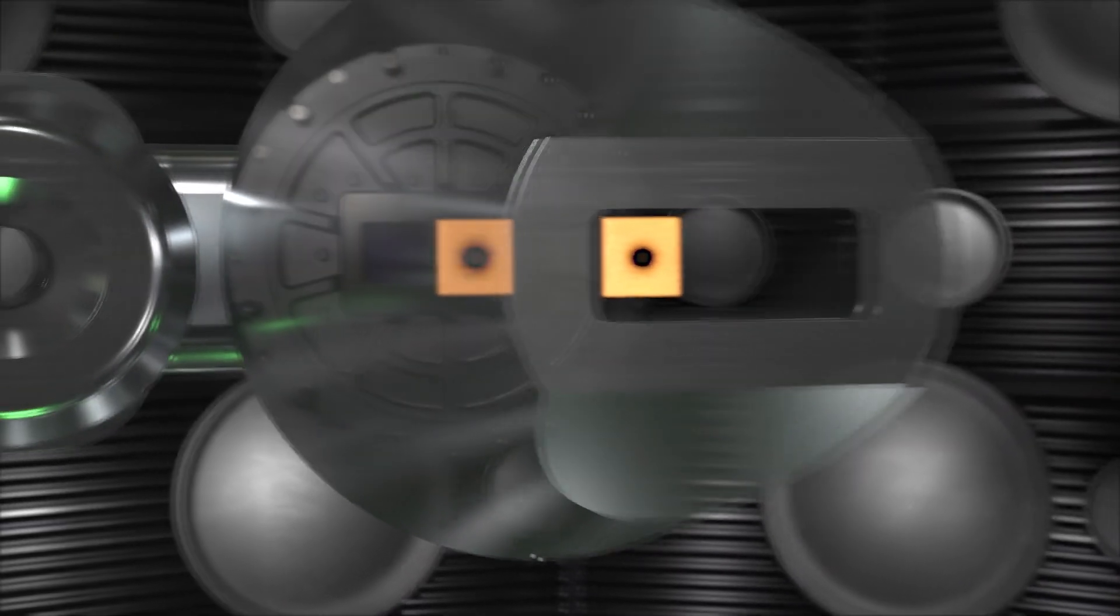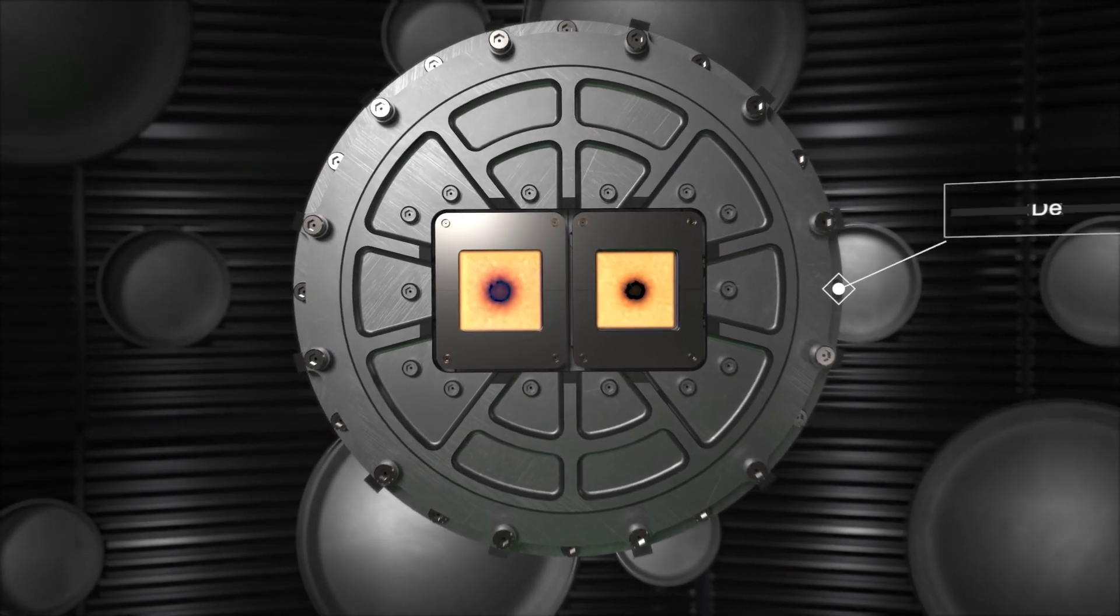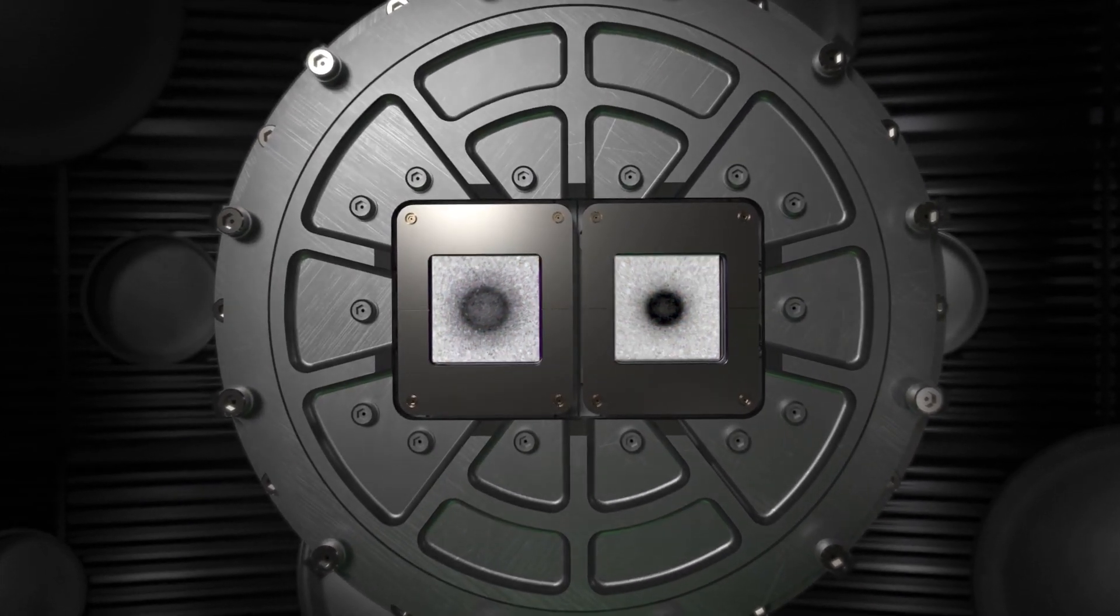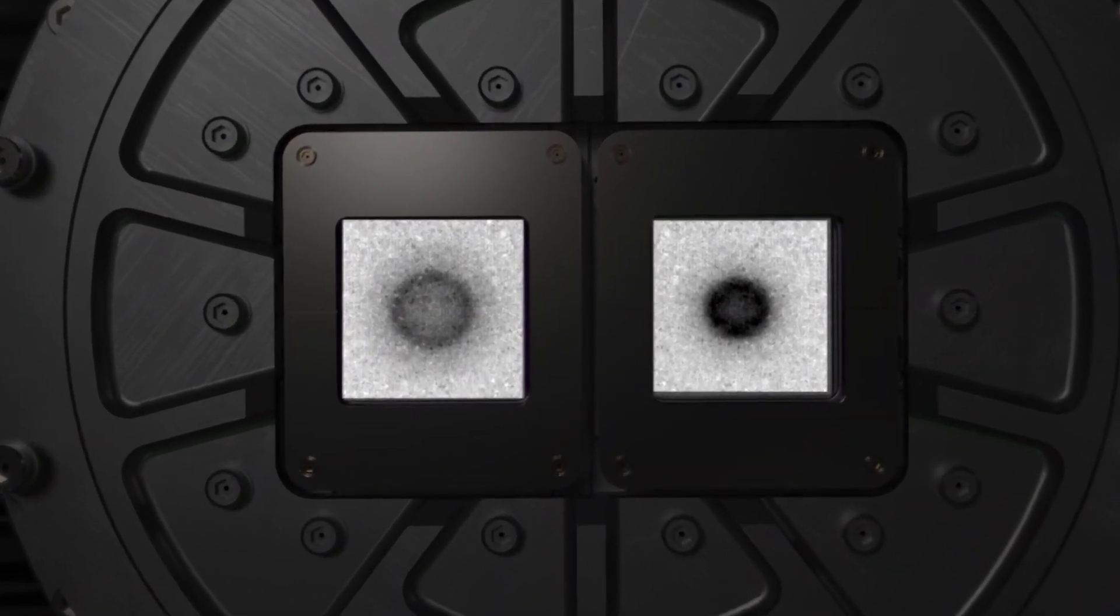The radiographs produced by the ARC laser reveal what the fusion fuel and capsule look like at two critical times—about two hundred trillionths of a second before peak compression and at peak compression.